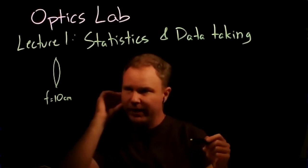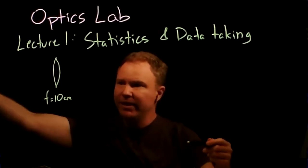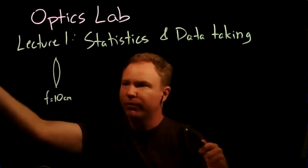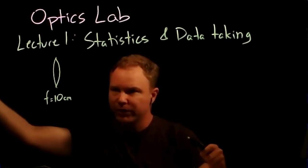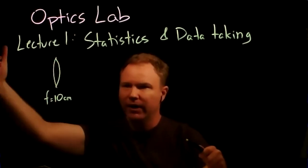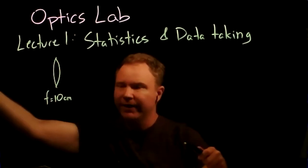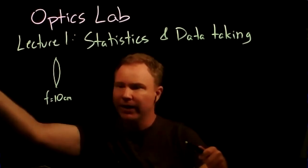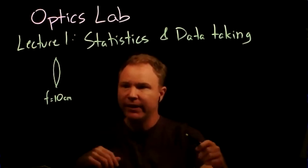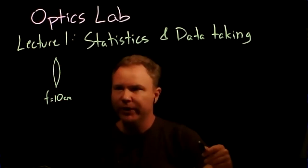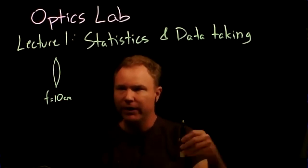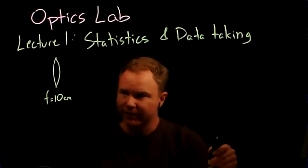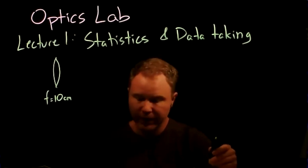What that means is that light coming in from infinity — from the sun or the stars — light coming in as parallel rays, gets focused roughly 10 centimeters back from the center of the lens. That's what it means to have a focal length of 10 centimeters.